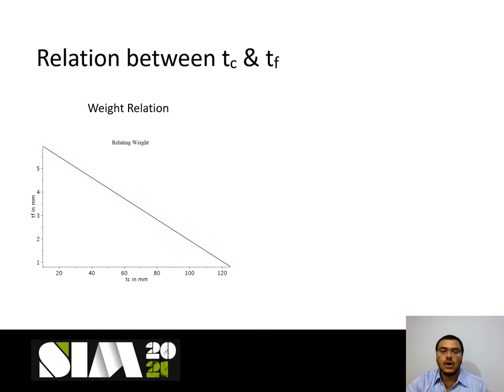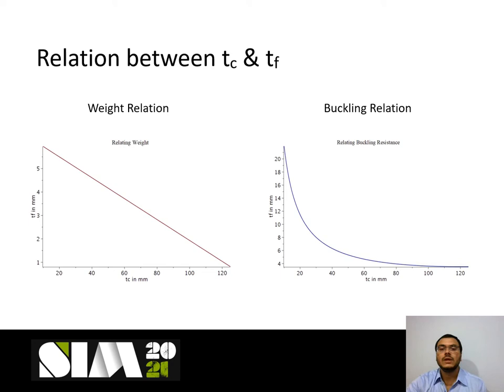Any point on or above the buckling relation line satisfies the buckling criteria, and any point below the weight relation line results in a sandwich panel with lower weight than the stiffened plate. To make the analysis more effective, these two graphs are superimposed. Let's first try the sandwich panel with S355 face plate.